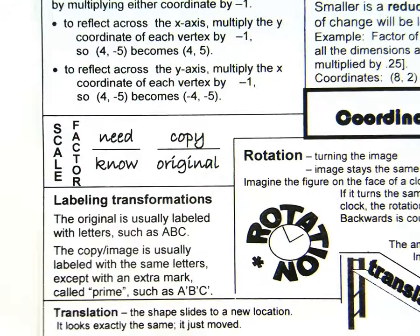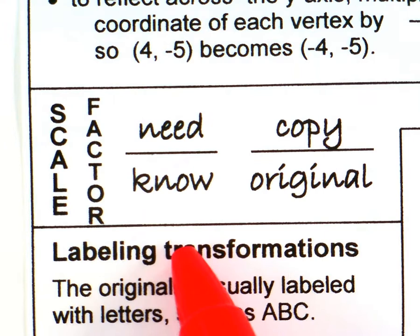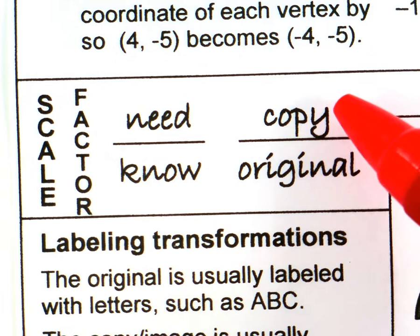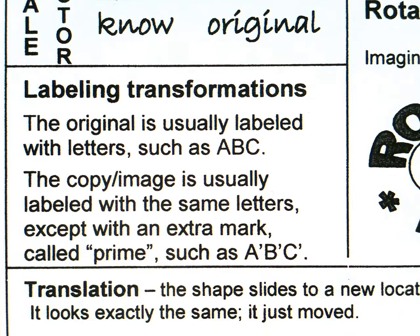Many of these use scale factor. Scale factor is need over know, new shape over old shape, and the same as copy over original. Sometimes they're called a pre-image and an image where the image is the same as the copy. How are we going to label the transformations? The copy or the image is usually labeled with the same letter. So if you have vertex A, in its copy the corresponding one would be A prime. We always keep them corresponding. One time on the state test, that's all you had to know to get the question right.